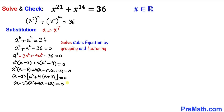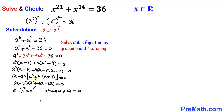Now we have two factors equal to zero. Separating them: a - 3 = 0, and a² + 4a + 12 = 0. Focusing on the first equation, moving -3 to the right hand side gives us a = 3, which is one of our solutions.